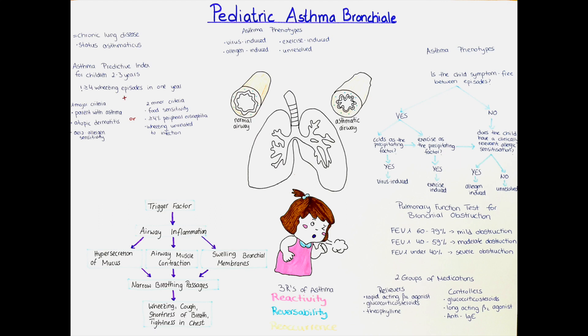A child can be considered to be of high risk to develop asthma if he had four or more episodes of wheezing in one year, of which at least one episode was confirmed to be a true wheezing by a doctor, plus either one major criteria or two minor criteria. The major criteria are having a parent with asthma, having atopic dermatitis, or having a sensitivity to an aeroallergen. The minor criteria are having a food sensitivity, having a peripheral eosinophilia of at least 4%, and experiencing a wheezing that is not related to an infection.